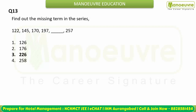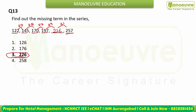Missing series: 122, 145, 170, 197, __, 257. Differences: 23, 25, 27 — increasing by 2 each time. Next difference = 29, so 197 + 29 = 226. Check: 226 + 31 = 257. Correct. The answer is 226, option three.